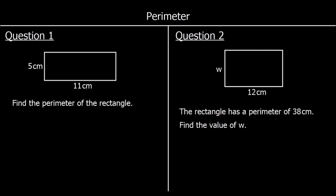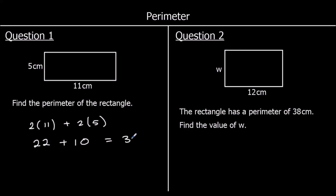And to finish up we've got two questions. Question one: find the perimeter of the rectangle. The opposite sides are equal, so we've got two elevens and two fives. Two elevens make 22. Two fives make 10. 22 and 10 make 32. So the length all the way around the edge of the shape — eleven plus five plus eleven plus five — is 32 centimeters.